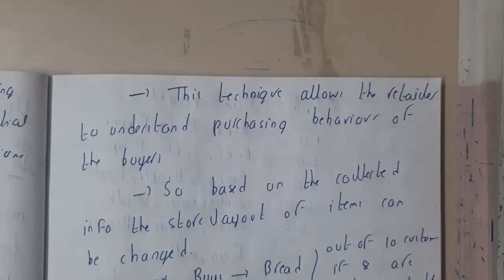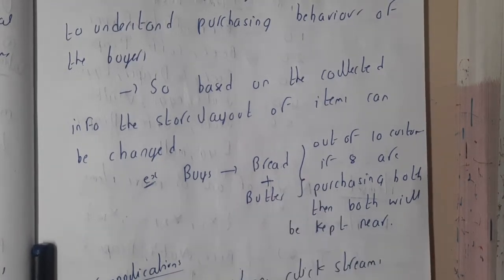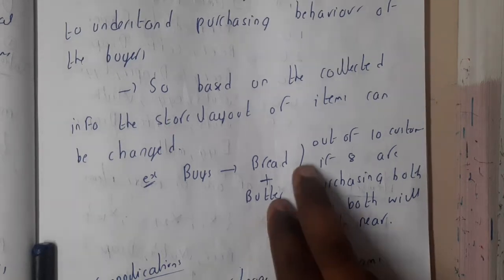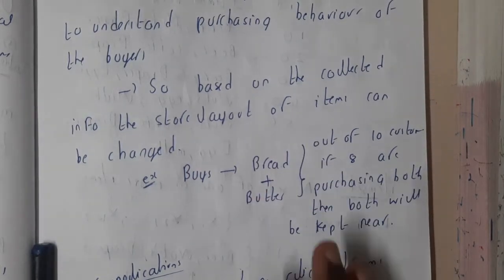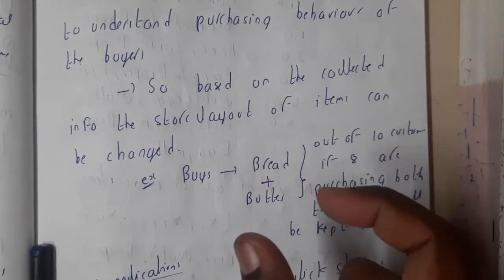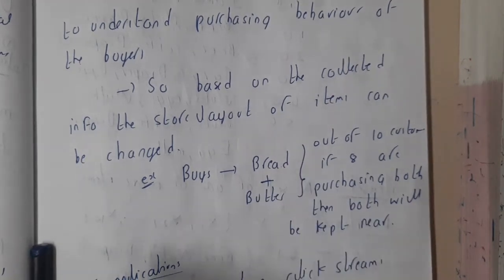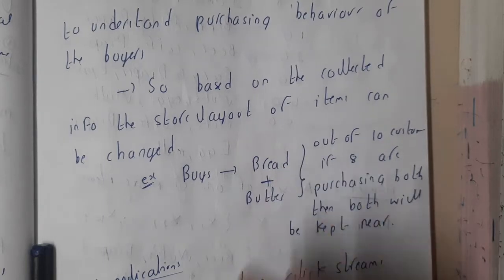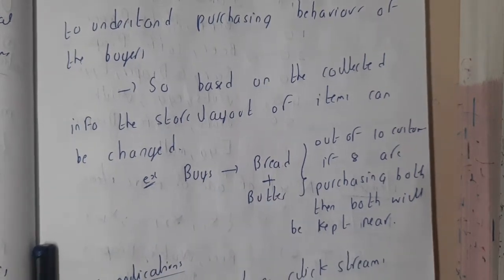Assume that you came to a shop to buy bread. You saw the butter there and thought, let's have bread and butter at home, so you bought both. If many customers are buying the same items, you can start a sale on that combo, sell them together, or keep both at the same place so whenever someone comes to buy bread they will see the butter and buy it — indirectly generating more profit.